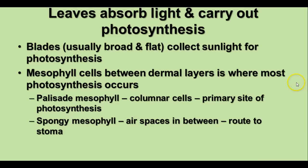Leaves are the main organs for absorbing light and carrying out photosynthesis. They are usually composed of blades, which are broad and flat to collect sunlight. In between the dermal layers are mesophyll cells made of parenchyma — this is where most photosynthesis occurs. There are two main kinds of mesophyll: palisade mesophyll, which are column-shaped cells packed with chloroplasts and are the primary site of photosynthesis; and spongy mesophyll, which are more roundish cells with air spaces that provide a route to the stoma for gas exchange.